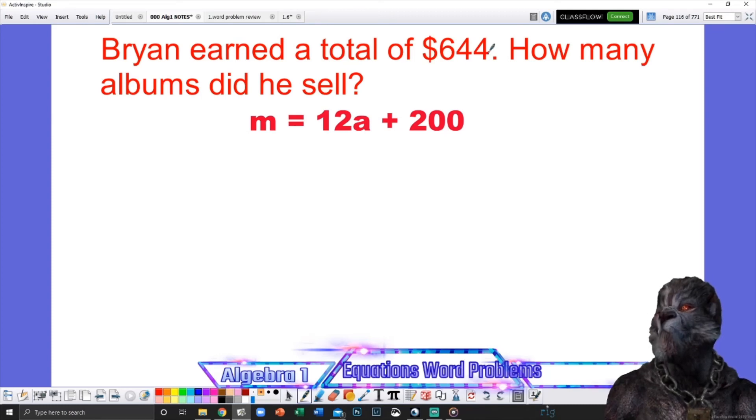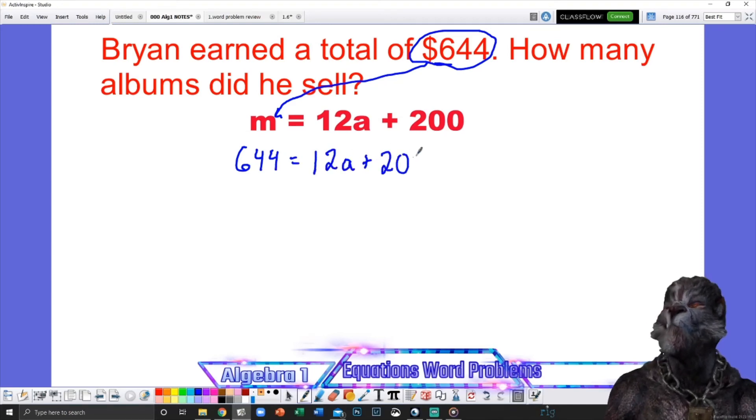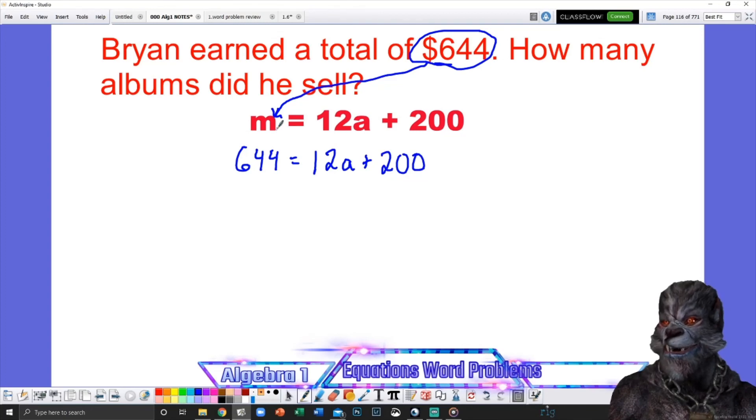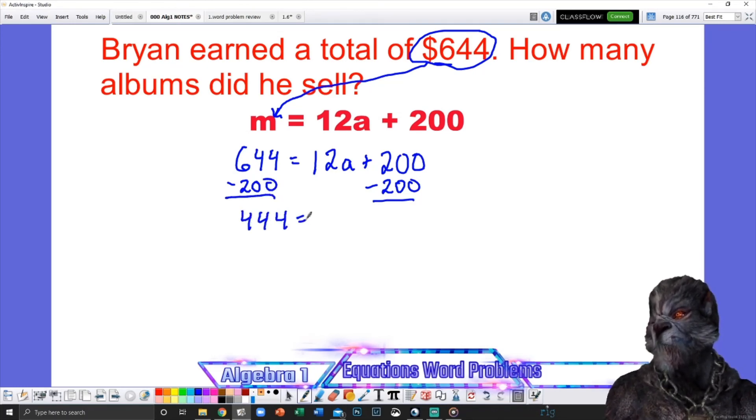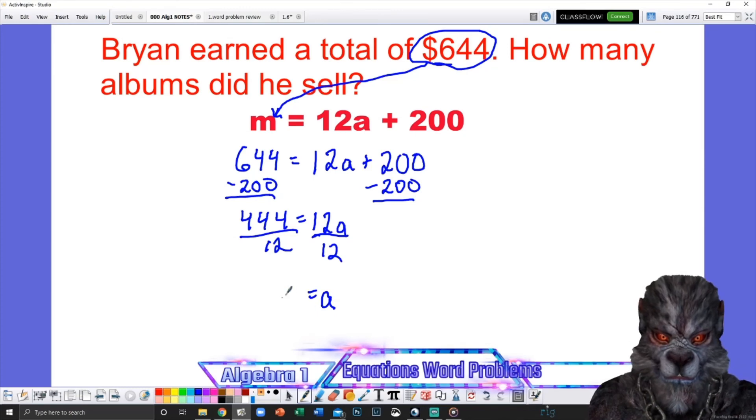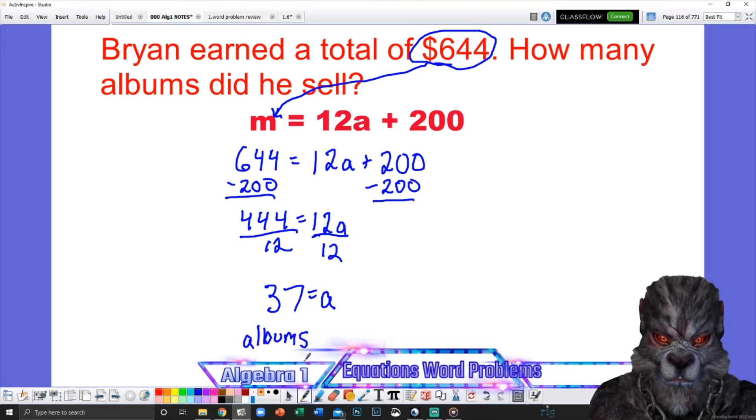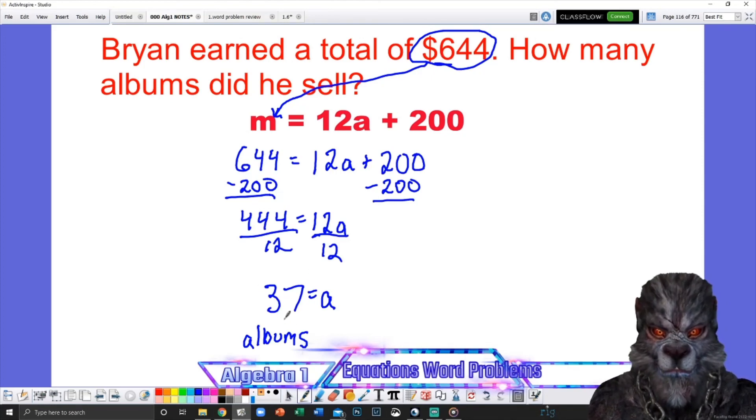Brian earned a total of $644. How many albums did you sell? Dollars is money. So money is going here. $644. And then solve. Now, I could have very easily asked you, how much money would he make if he sold 100 albums? And we would have put it there. It just depends. In this case, I again keep asking this one over here. Just a coincidence, though. All right, so I'm going to subtract 200 from both sides. This gives me 444 equals 12A. Divide both sides by 12. I'm going to grab that calculator again. 444 divided by 12 equals 37. 37 equals A. What did A mean? A was albums. So in order for Brian to make $644, he only has to get 37 people to buy his album.